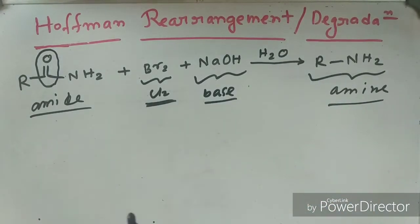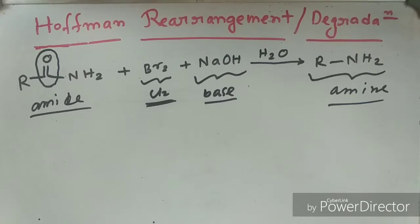From amide, one amine forms in presence of bromine — that is halogen — or in presence of chlorine, and along with sodium hydroxide, that is a base, in presence of water. So what will be the reaction mechanism and what are the things that will control the reaction, I am going to discuss about that.